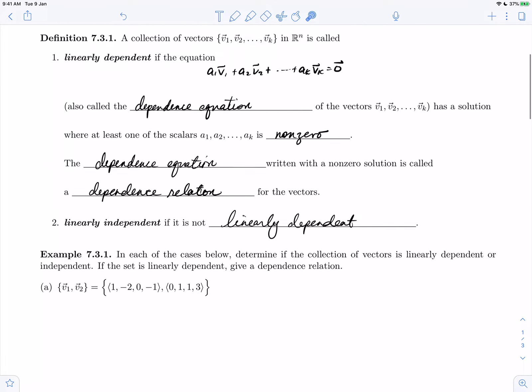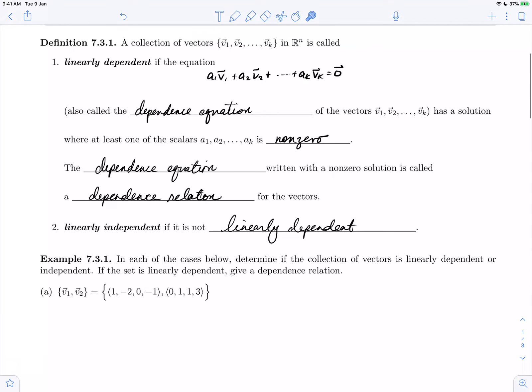We're going to apply the definition above, which means we need to examine the dependence equation for these two vectors. That dependence equation is nothing more than a linear combination, a1v1 plus a2v2 set equal to the zero vector.